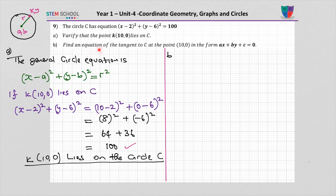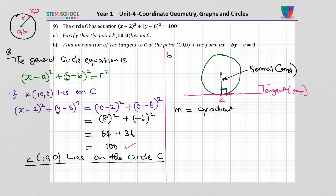Question B: Find the equation of the tangent to C at the point 10 0 in the form ax plus by plus c equals 0. We have the circle with center C and point K. Point K has coordinate 10 0, and center C has coordinates 2, 6. From the circle property, a line from the center to the tangent forms a right angle — the normal line is perpendicular to the tangent.